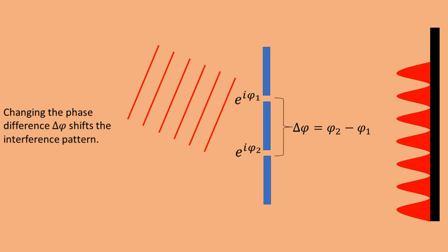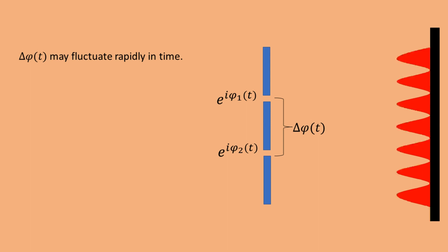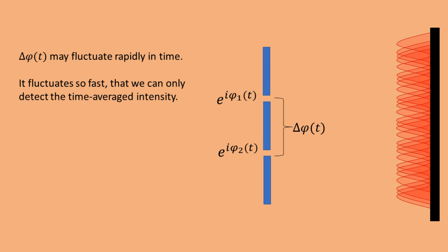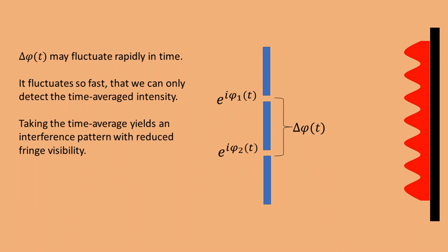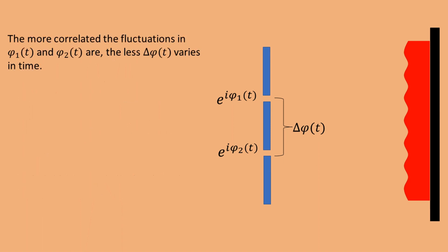So what can happen so that we don't get interference fringes in the far field? So far, we've considered a time-harmonic field, which means that the phase differences are fixed in time. But what if we consider a field that is not time-harmonic, so that the phase difference can vary in time? What happens then is that the position of the interference pattern changes in time. Now suppose that the phase difference fluctuates so quickly that we can only measure the time-averaged intensity. In that case, the interference pattern gets blurred, so the fringe visibility is reduced. And the more the phase fluctuates, the more blurred the interference pattern becomes. So what determines by how much the phase difference fluctuates? If we assume that the phases of both slits, phi1 and phi2, fluctuate randomly, then it is the correlation between the fluctuations at these two points that determines how much delta-phi fluctuates.